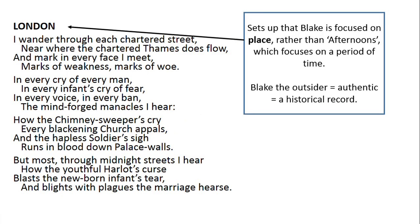Looking at the title: London obviously does what it says on the tin, but it sets up specifically that Blake is focused on place rather than Afternoons, which was focused on a period of time. Afternoons had that sense of vagueness and repetitiveness, whereas here Blake is focused very specifically on the capital city. There's also the idea that Blake was a bit of an outsider in his society, and as a commentator on London he could be more objective — he was on the outside of it, not trapped in the way the other people in that society were.